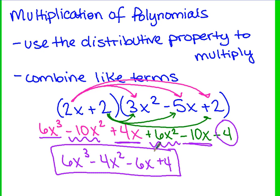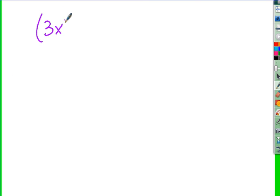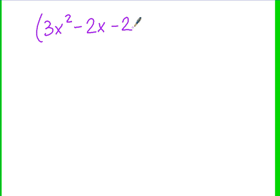I'm going to give you one more — I want you to try this one on your own. We have (3x² - 2x - 2) times (x - 2). Use the distributive property to multiply and then finish by combining like terms. Go ahead and pause the video, try this one, and we'll come back to it.